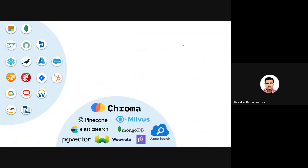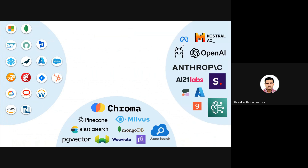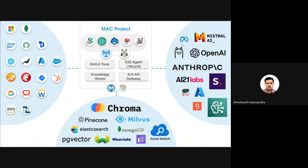Next I would like to talk about the MAC project, which I have used to build two of my AI agents. MAC stands for MuleSoft AI Chain project. The objective of MAC is to help organizations design, build, and manage AI agents, all within the MuleSoft platform in a completely no-code/low-code approach.